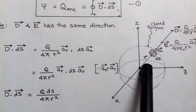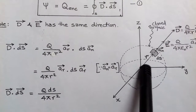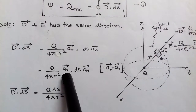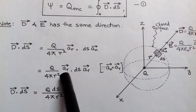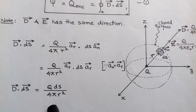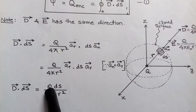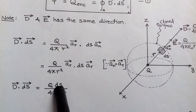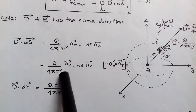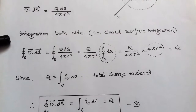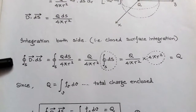Since the normal unit vector equals unit vector r — because both are in the same direction as seen from the figure — the dot product is between unit vector r and unit vector r. The angle between them is 0, so the dot product of the same vector is 1. We get q times dS upon 4 pi r-squared, giving us equation 1.